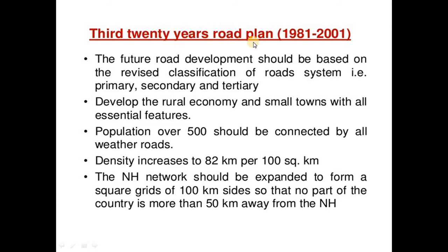The third 20-year road plan was implemented from 1981 to 2001. Road development was to be based on a revised classification system — primary, secondary, and tertiary. Based on this, highways and road construction would be divided. The plan aimed to develop the rural economy and small towns with all essential features.